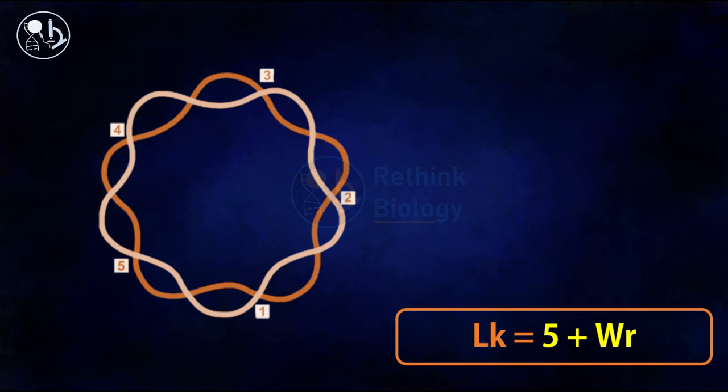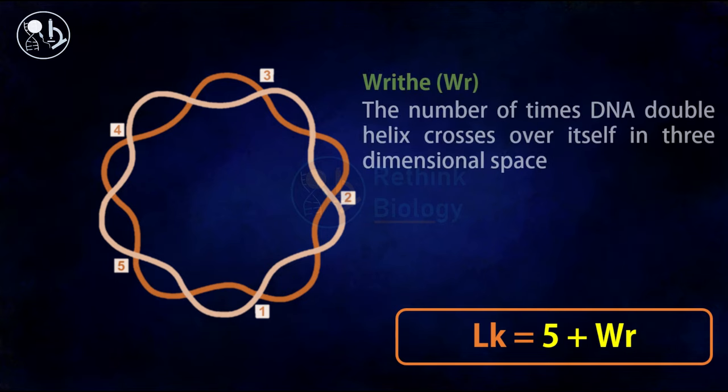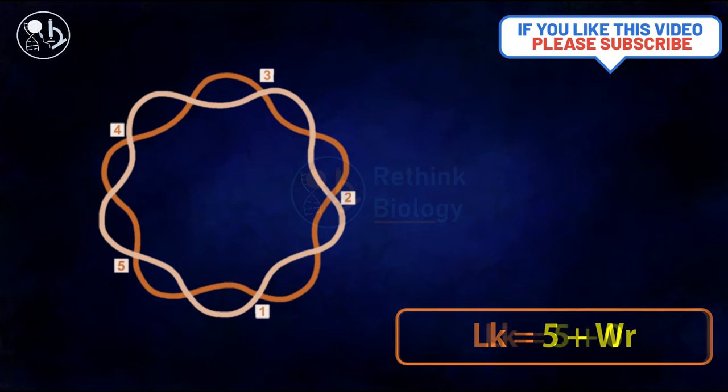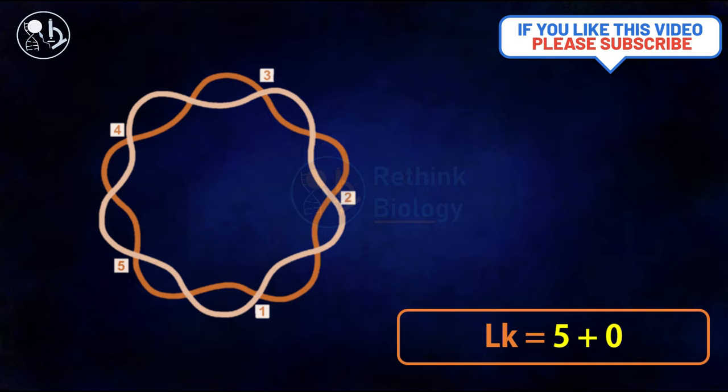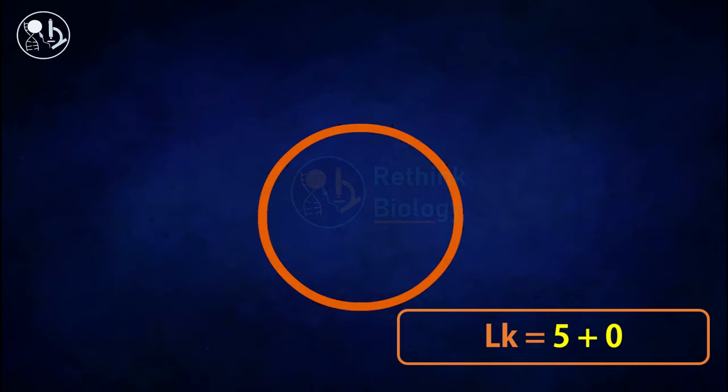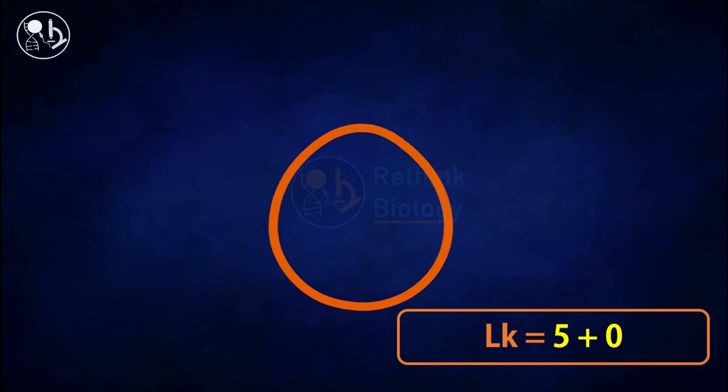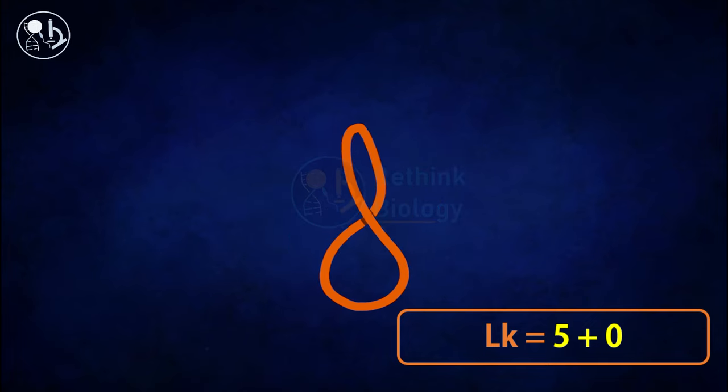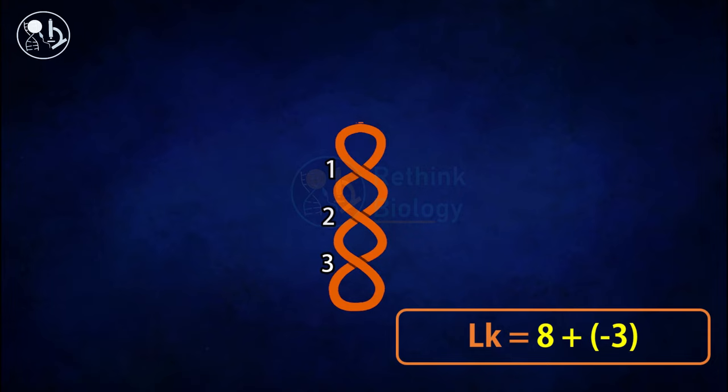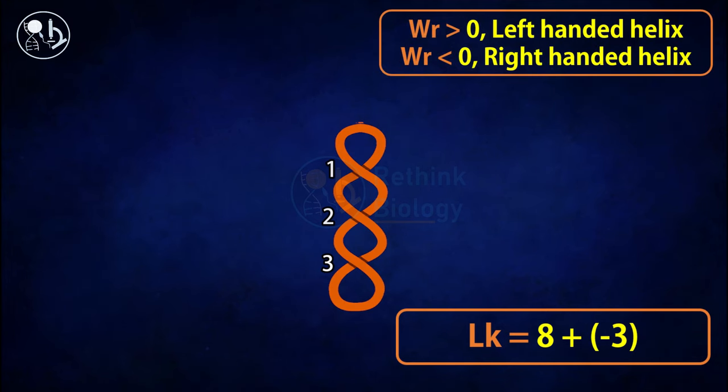Another topological component is wreath. Wreath refers to the number of times DNA double helix crosses over itself in three-dimensional space. In this case, wreath is zero as there is no such crossover. But if the DNA is rotated like this, the wreath will become minus three. The twist here will increase to eight in order to keep the linking number the same. Because of the right-handed helix, the wreath will be negative, and for the left-handed helix it will be positive in number.